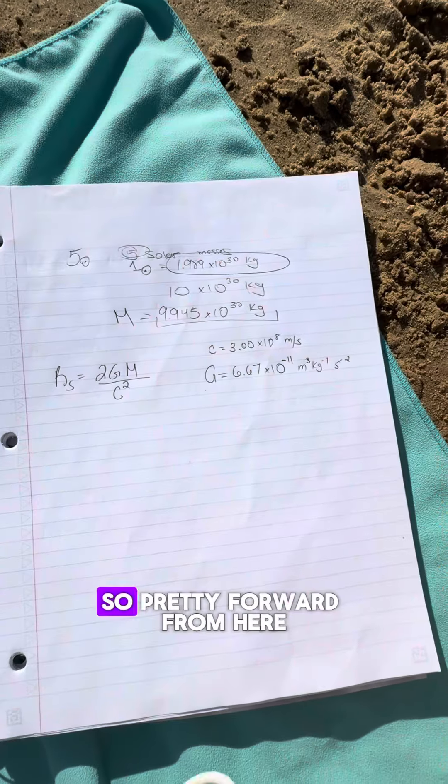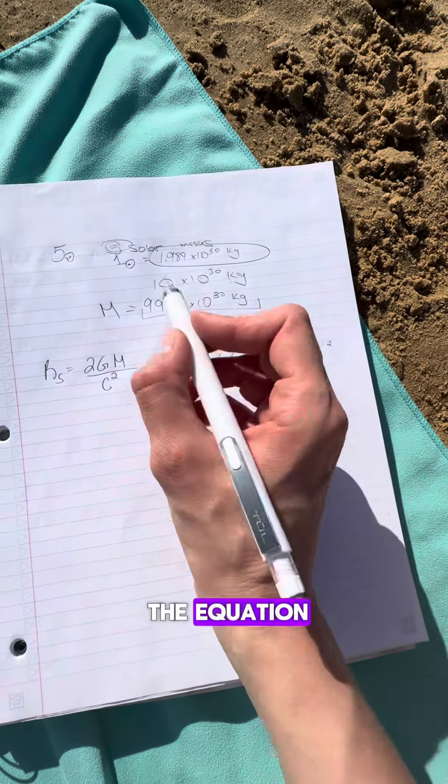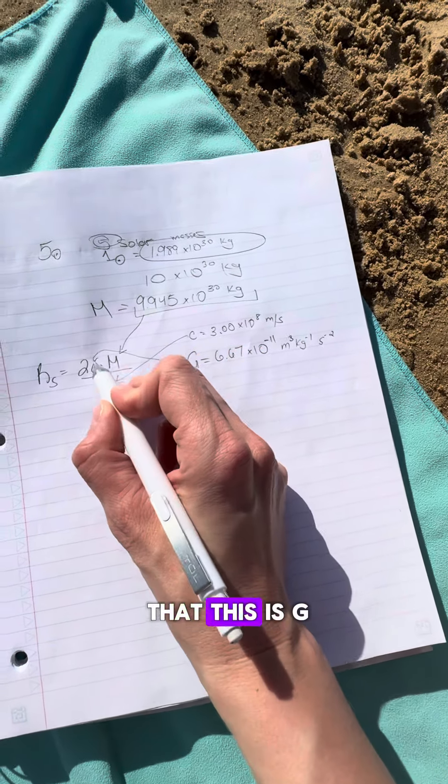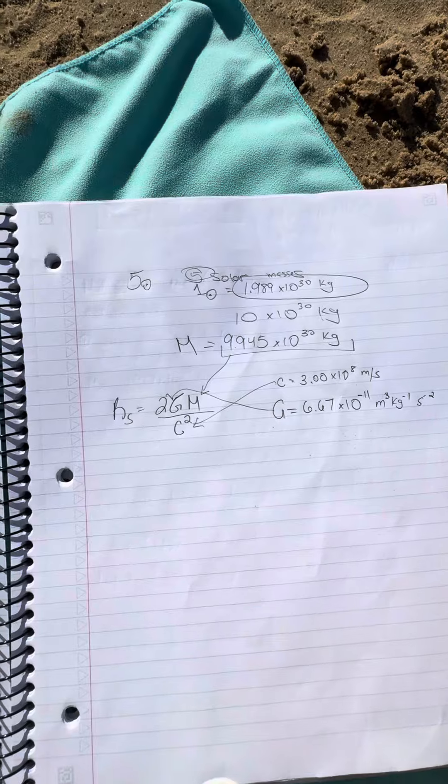Pretty straightforward from here. Let's put everything into the equation. We know that this is m, we know that this is c, we know that this is G. So bada boom.